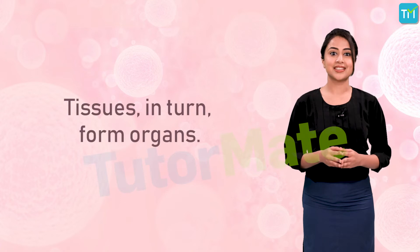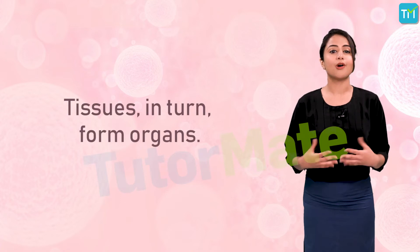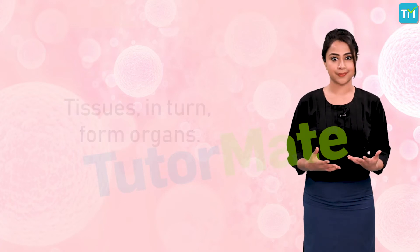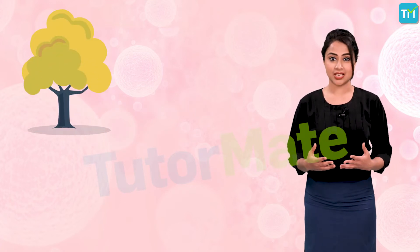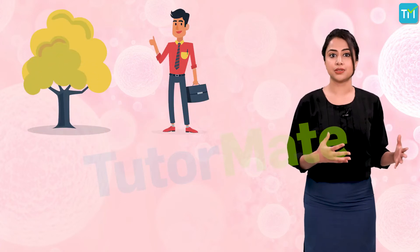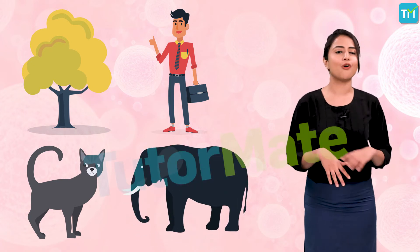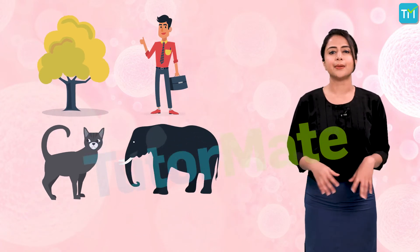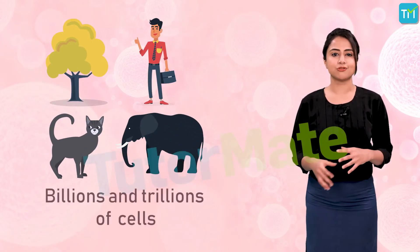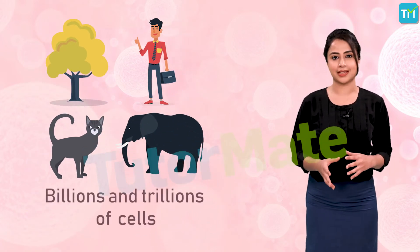Tissues, in turn, form organs. So a tree, a human, a cat, an elephant — all have billions and trillions of cells.